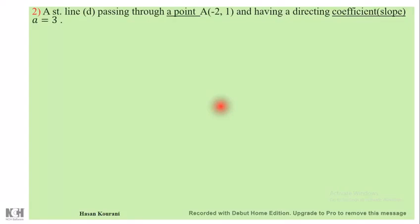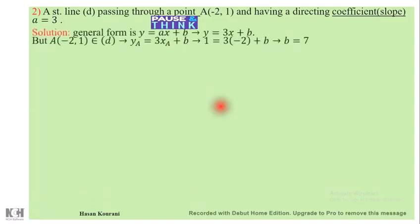The solution: it's preferable to think about the reduced equation since we have the slope directly. Plug in the slope, which is 3, to get y = 3x + b.